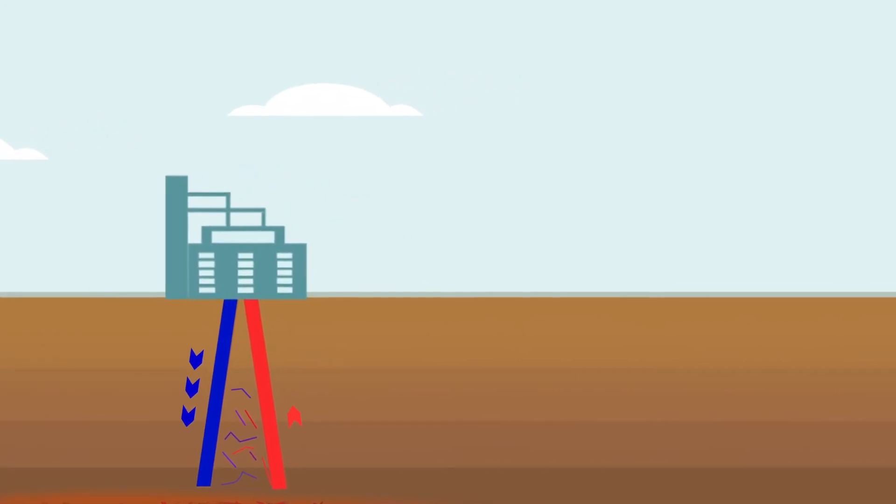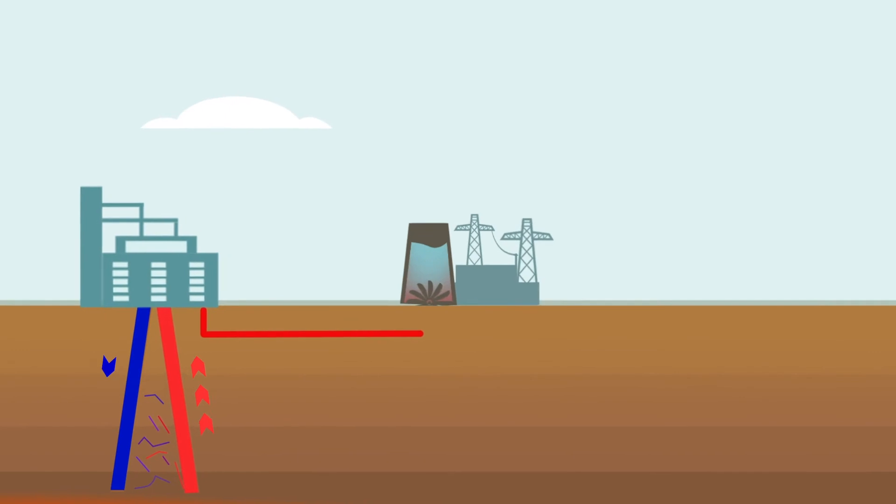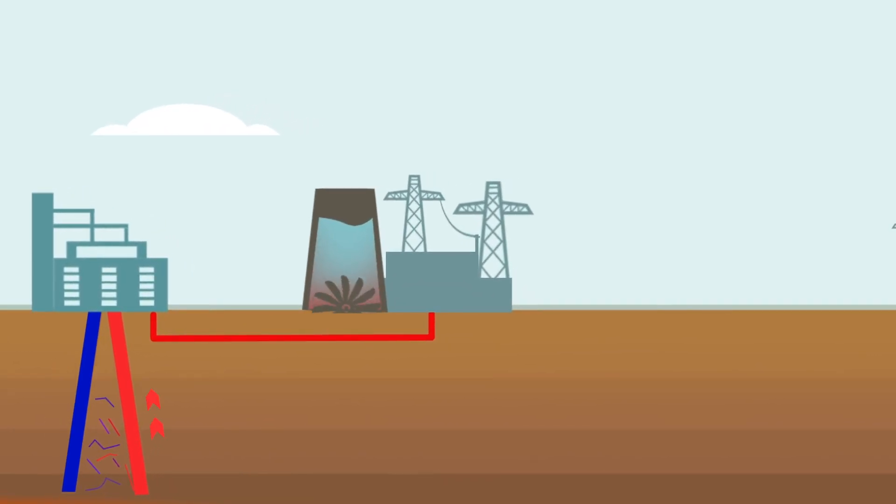Cold water is injected into a geothermal reservoir where it is heated. The hot water or steam is pumped to the surface to power steam turbines to generate electricity.